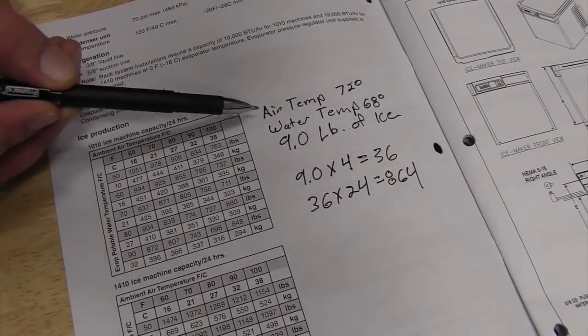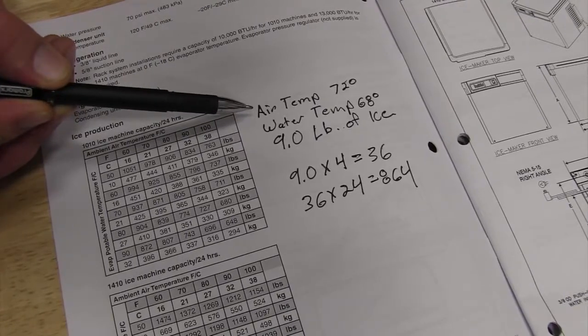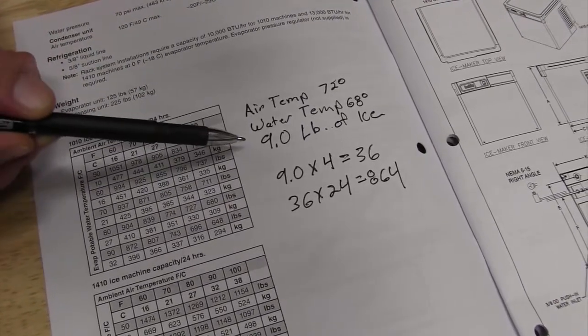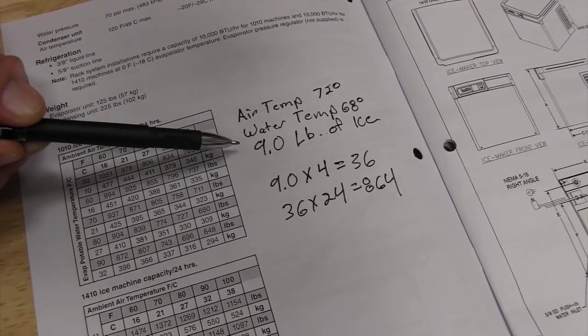We came up with a constant air temperature of 72, a water temperature of 68, and we got 9 pounds even of ice in 15 minutes.